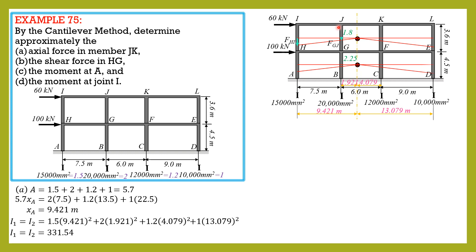But let's solve for moment at level 2 first. It is equal to 60 times 1.8, so it is 108 kilonewton meters. While the moment at this level 1 is 60 times quantity 3.6 plus 2.25, plus 100 times 2.25, and it is 576 kilonewton meter.